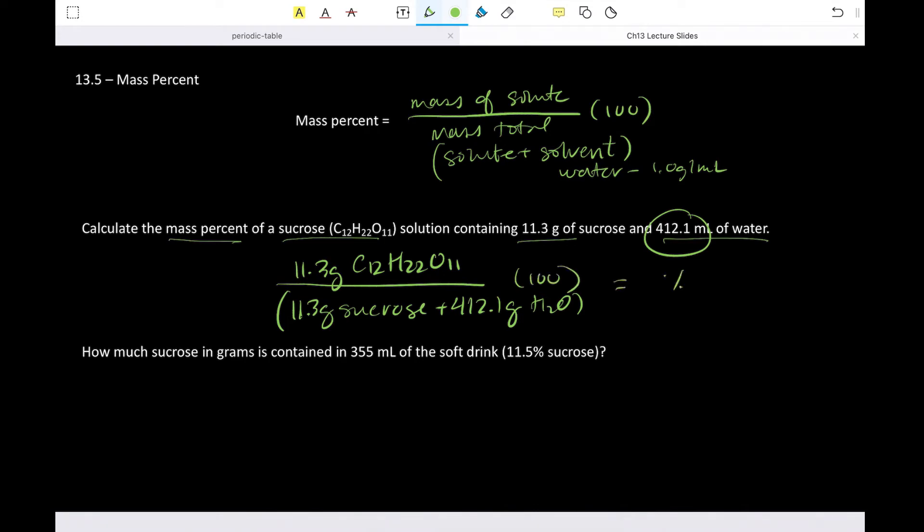And that's going to give us our percent by mass. All right. And then it goes on to ask us how much sucrose in grams is contained in 355 mils of the soft drink that it refers to in a previous question. That's 11.5% sucrose.